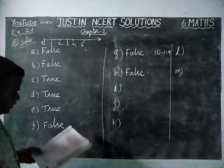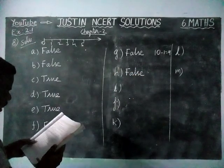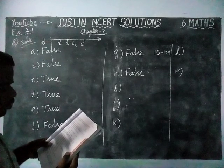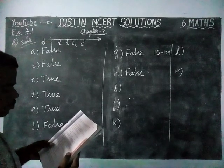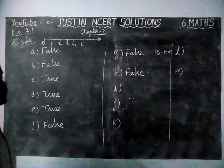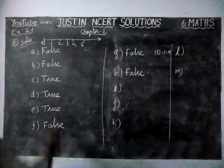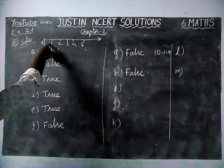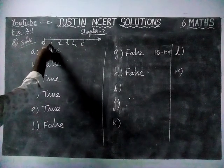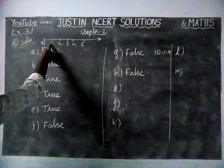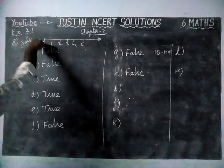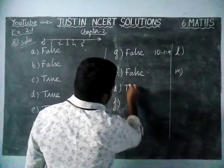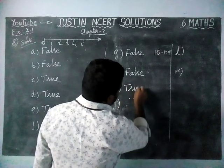Next, option I: 'The natural number 1 has no predecessor.' Yes, that is true, because the smallest number in natural numbers is 1. So for 1, we don't have any predecessor. This statement is true.